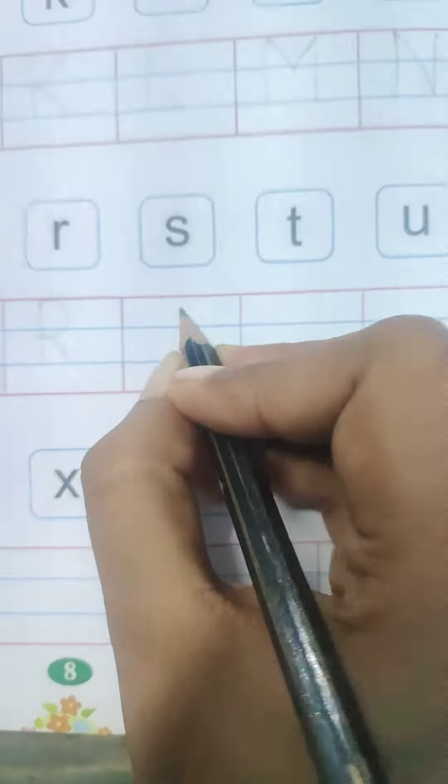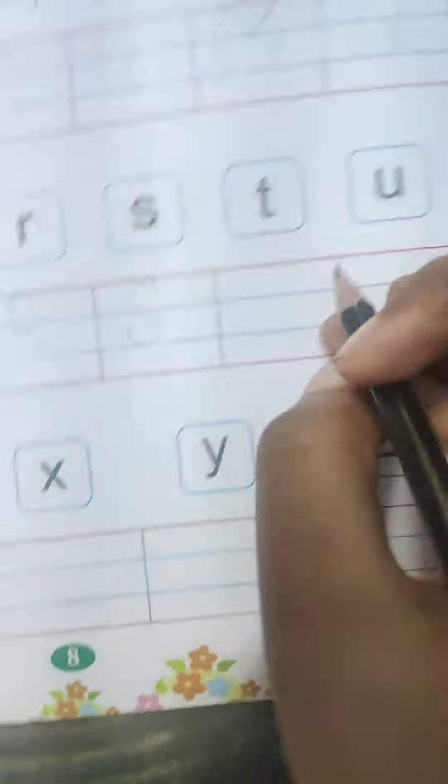S. S for ship. T. T for tiger. U. U for umbrella.